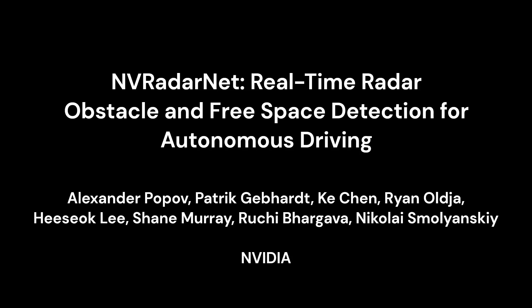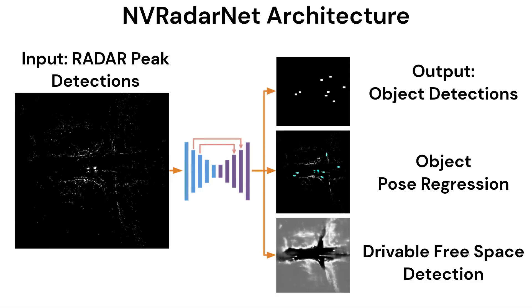We present NVRadarNet, real-time radar obstacle and free space detection for autonomous driving. The network is composed of a simplified U-Net-like architecture with skip connections. The input to the network is a top-down projection of an accumulated radar peak detection point cloud.